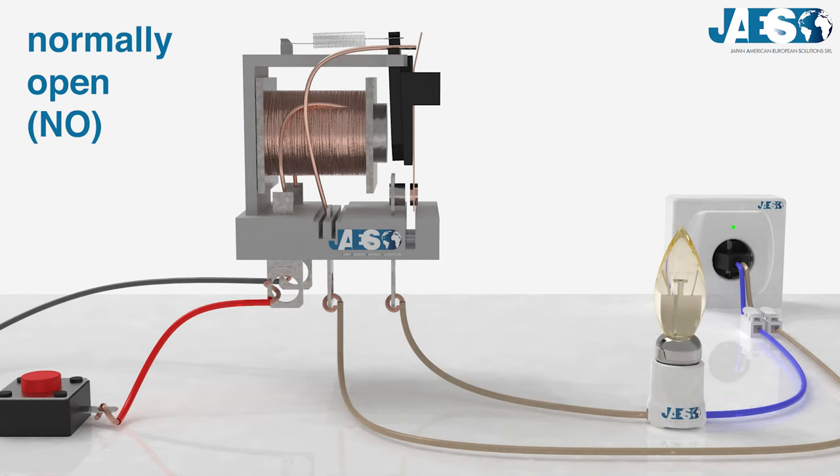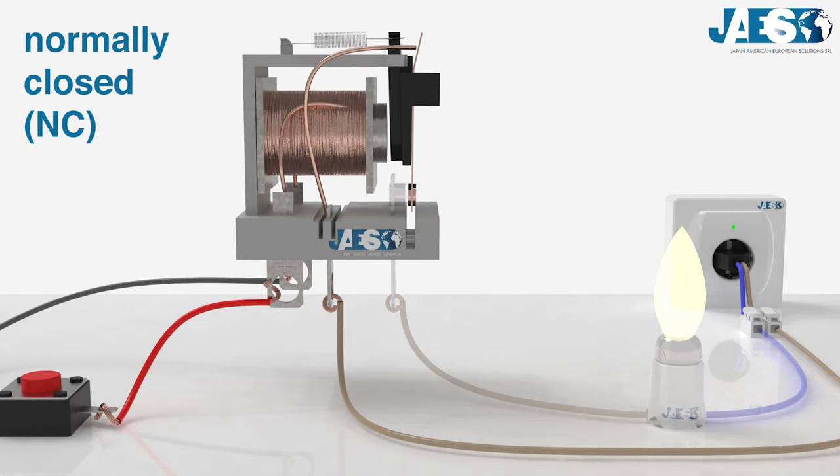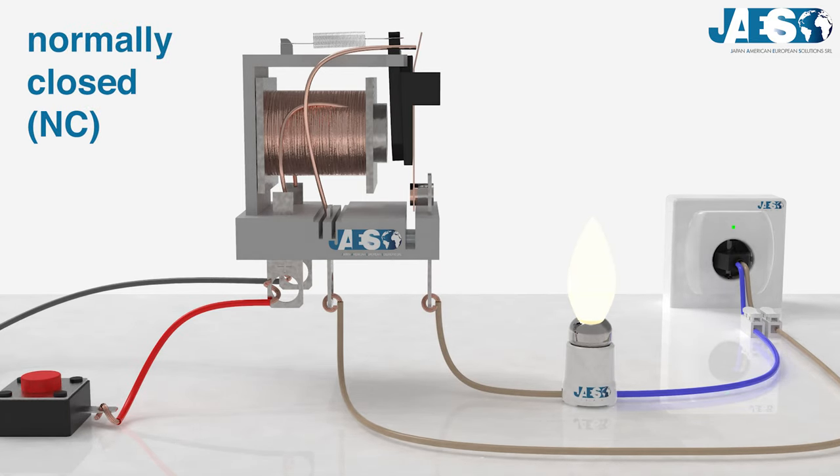In the Normally Open configuration, the contacts are disconnected, and they connect only when the electromagnet is energized. While in the Normally Closed configuration, the contacts are always connected, and when the electromagnet is energized, they disconnect.